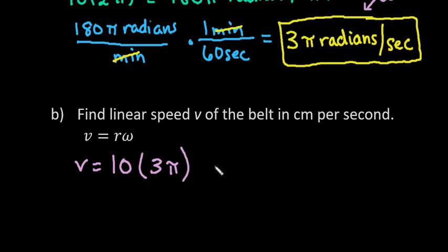Okay, and we end up with, if I multiply this out, 10 times 3π ends up giving me 30π centimeters per second.